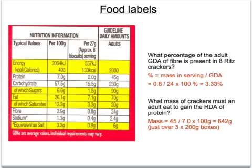You can use these food labels for various questions. For example: what percentage of the adult GDA of fibre is present in 8 of these Ritz crackers? Looking along the fibre line, the adult GDA is 24 grams and 8 Ritz crackers give you 0.8 grams. So that's 0.8 over 24 expressed as a percentage — 8 Ritz crackers give you 3.3% of the fibre you need as an adult per day.